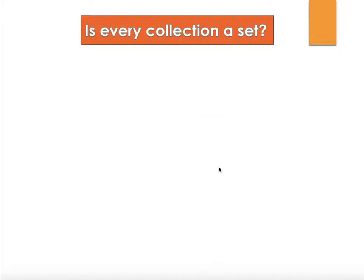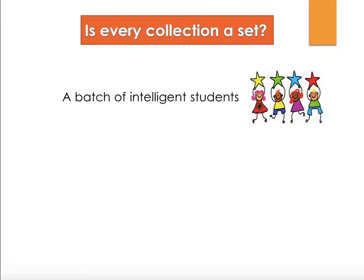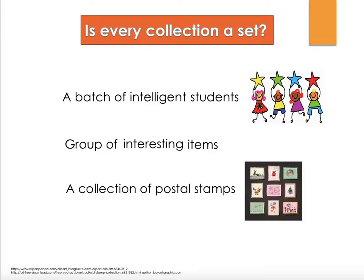Not every collection can be called a set. Consider a batch of intelligent students, a group of interesting items, or a collection of postal stamps. Keywords like 'intelligent' and 'interesting' are not well-defined — what is interesting to one person may not be interesting to someone else. Because they are not well-defined, they cannot be called sets. But a collection of postal stamps is well-defined — a postal stamp is a postal stamp everywhere — so it is a set.